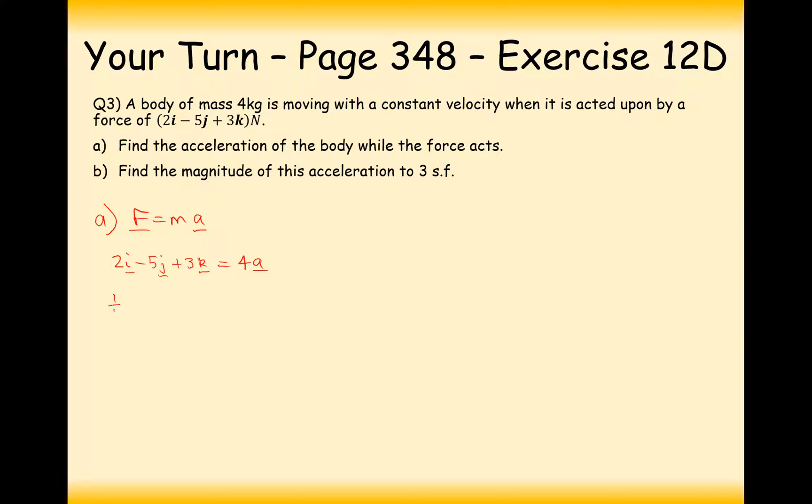So divide through by 4 now and we get half I minus 5 over 4J—oops, that's an I, J I mean—plus 3 over 4K. And this is my acceleration. And that's the answer to part A.